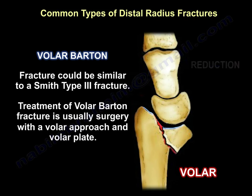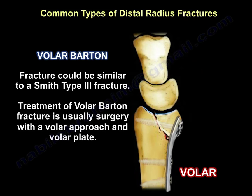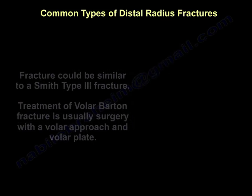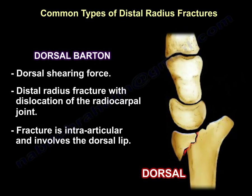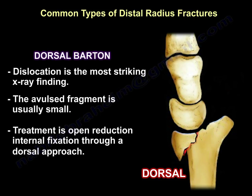The treatment of volar Barton fracture is usually surgery via a volar approach with a volar plate. The dorsal Barton fracture involves a dorsal shearing force resulting in an intra-articular distal radius fracture with dislocation of the radiocarpal joint, involving the dorsal lip. The wrist is dislocated and the avulsed fragment is usually small. Treatment is open reduction and internal fixation through a dorsal approach.